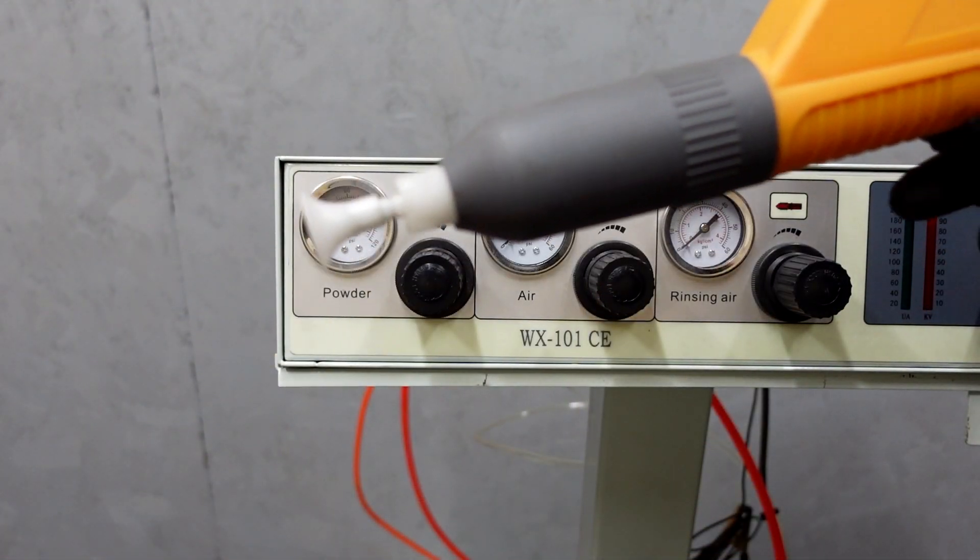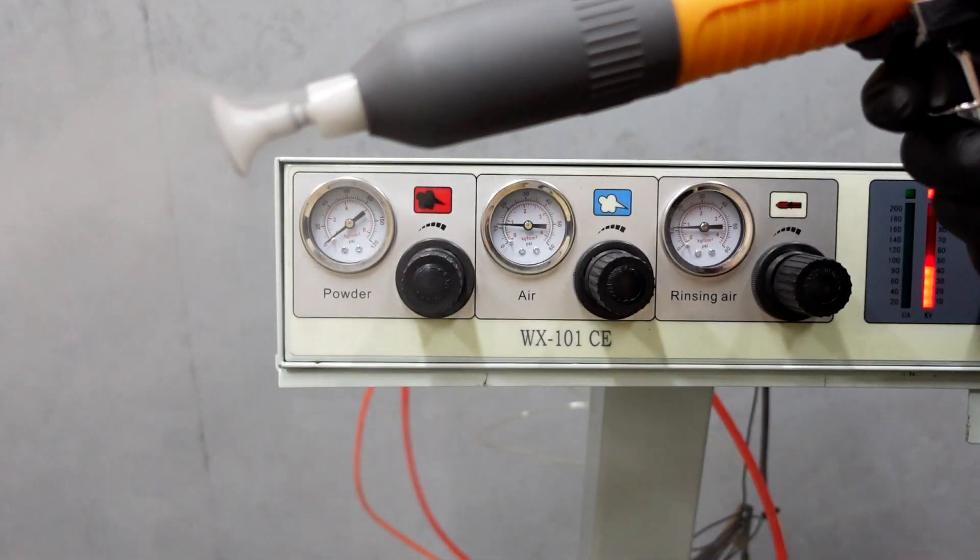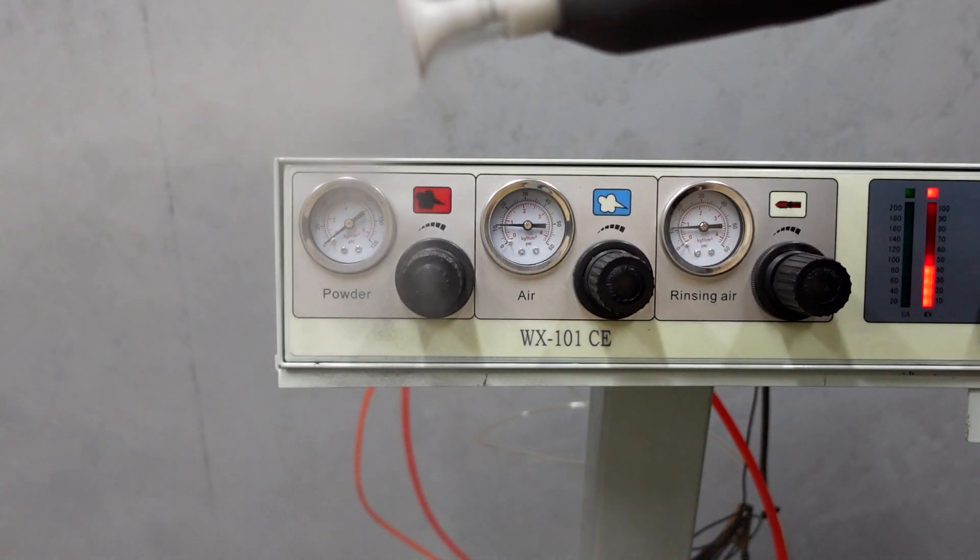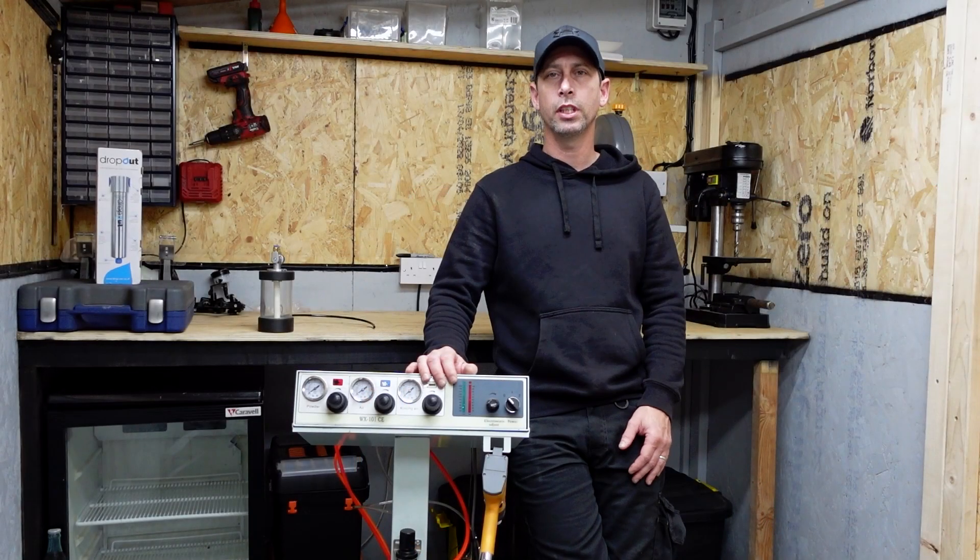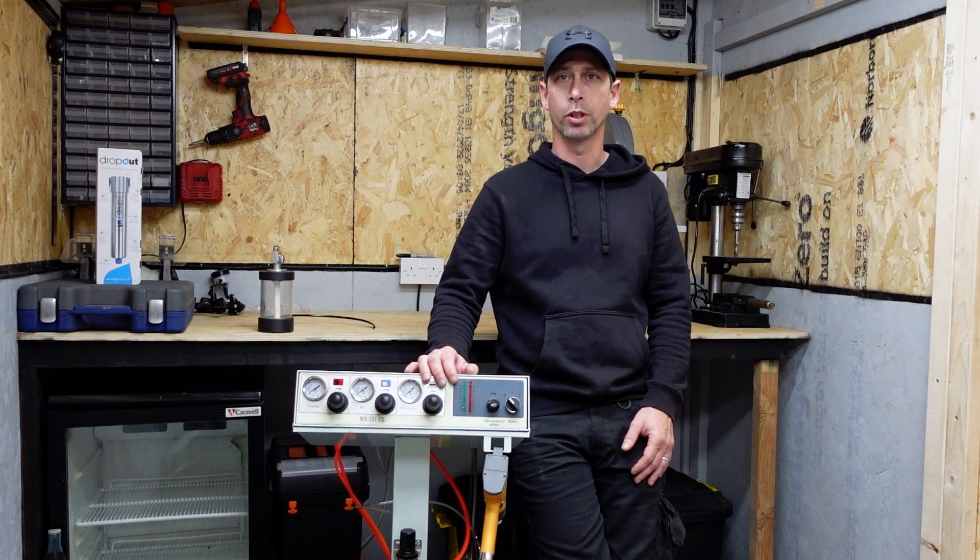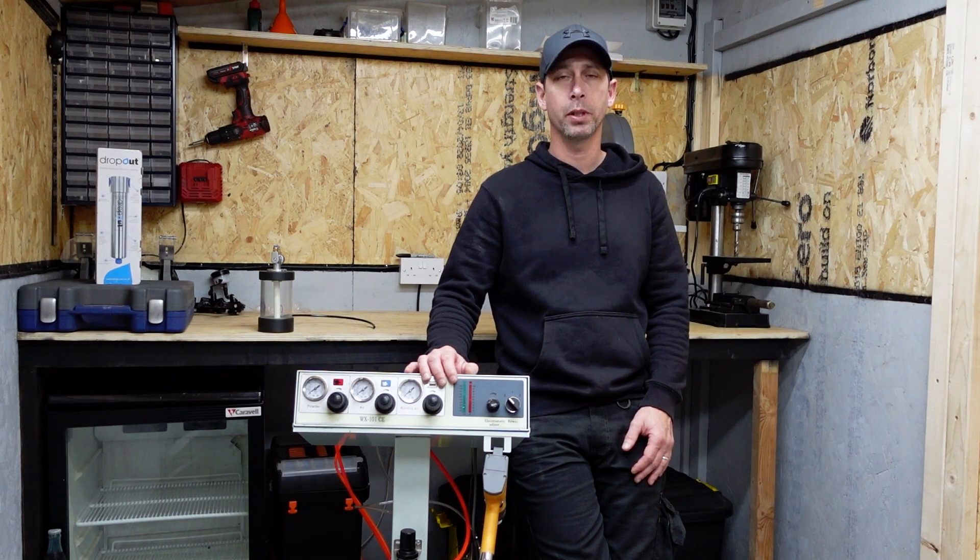Now that the hopper's set, we're going to slowly open the powder button while pulling the trigger, until we get our desired amount of powder. If you use these settings as your baseline, you can't go wrong. But you may want to play around with the settings until you find ones that work best for yourself.